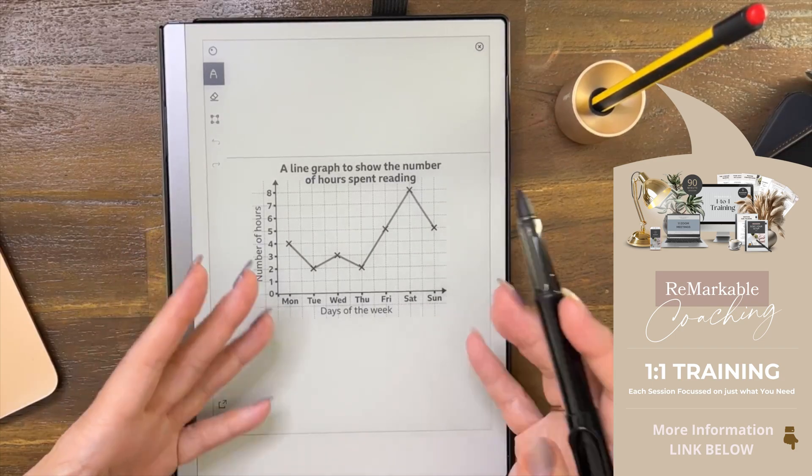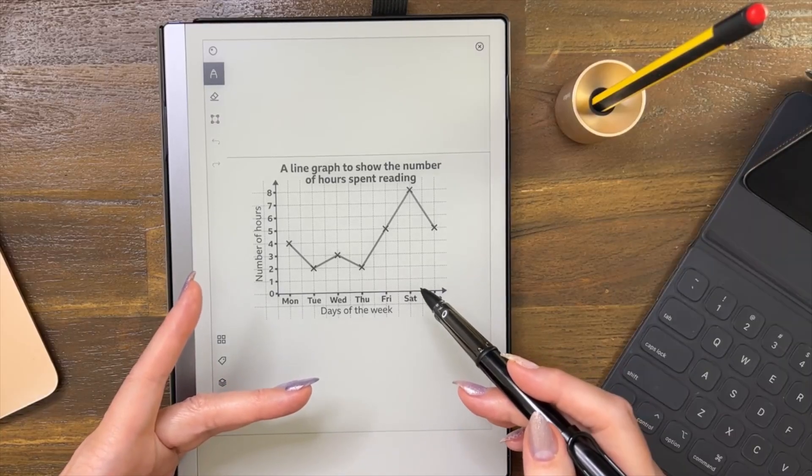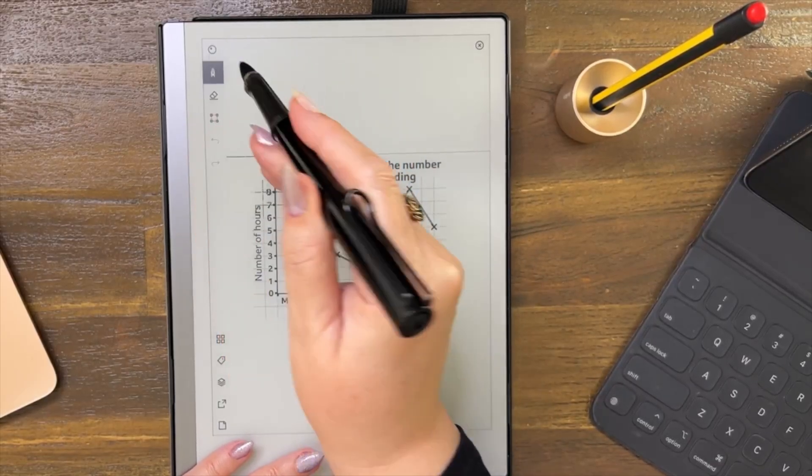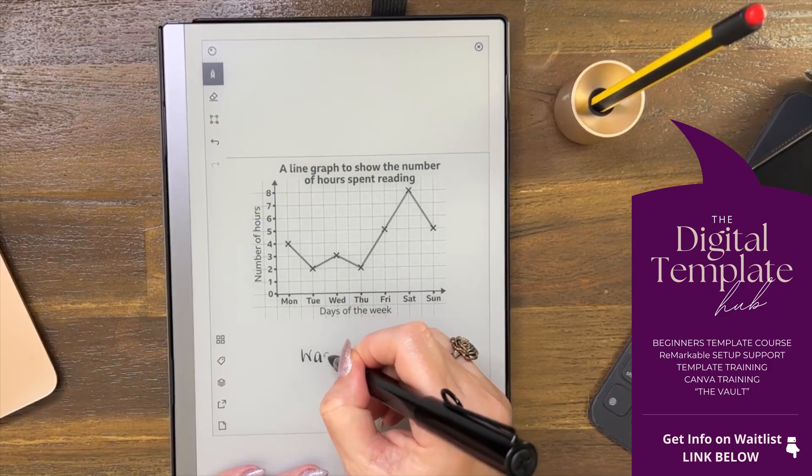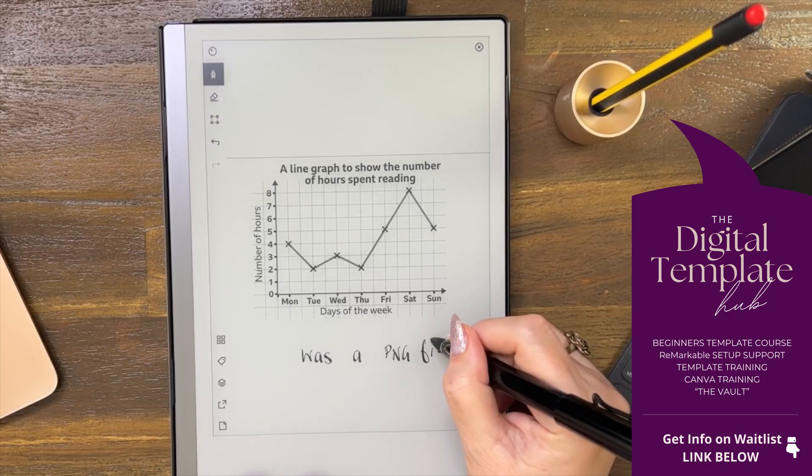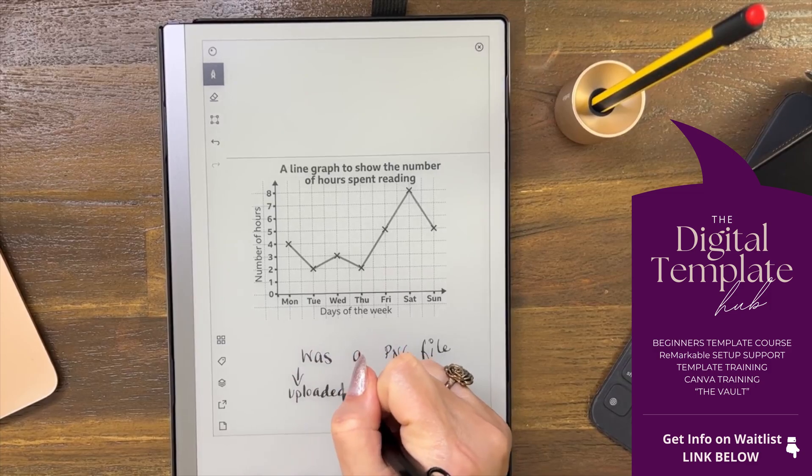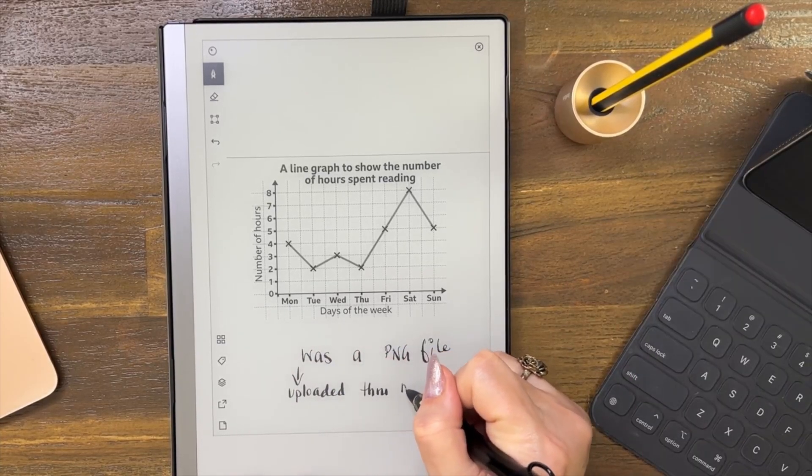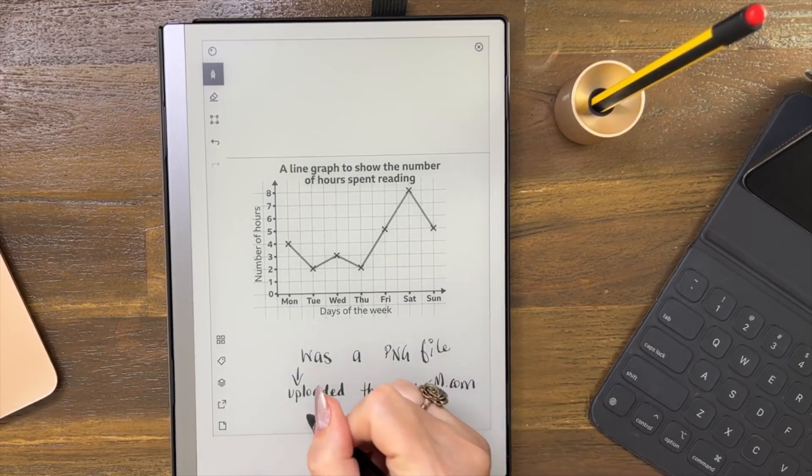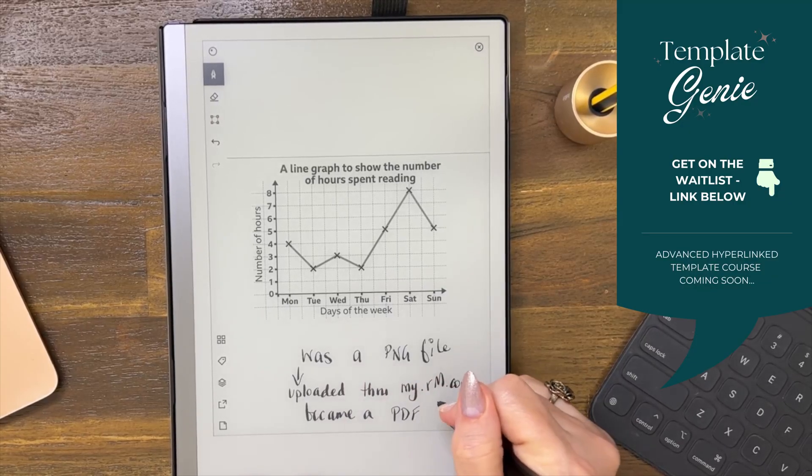You can upload a page like I did. This is a PDF now. It was an image to start with, a PNG image, but now it's a PDF. I'll just write that down so you can see. It was a PNG file, but when I uploaded it through my.remarkable.com, it became a PDF file, which is what it is now.